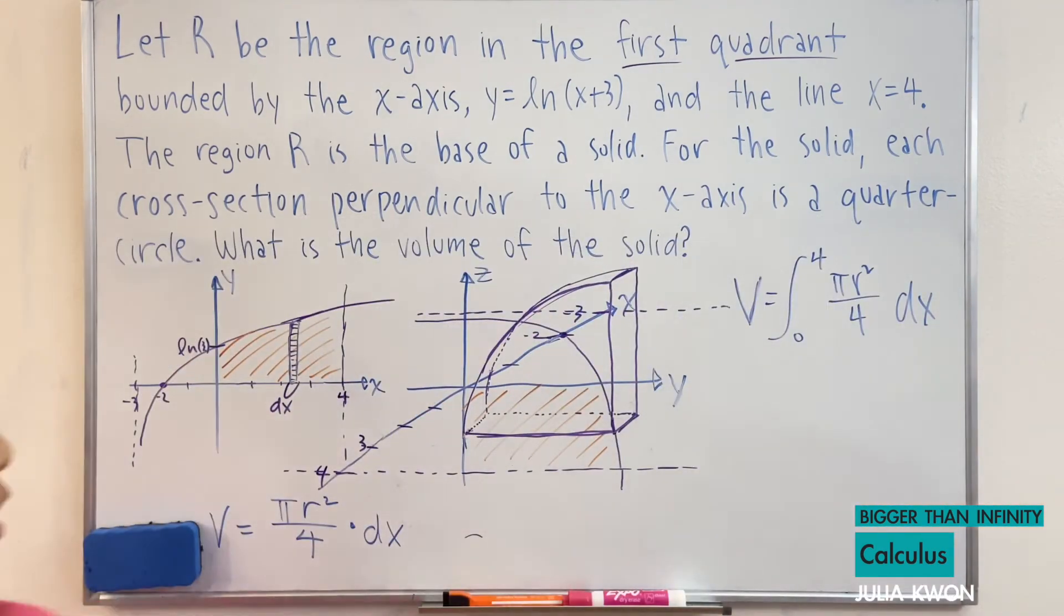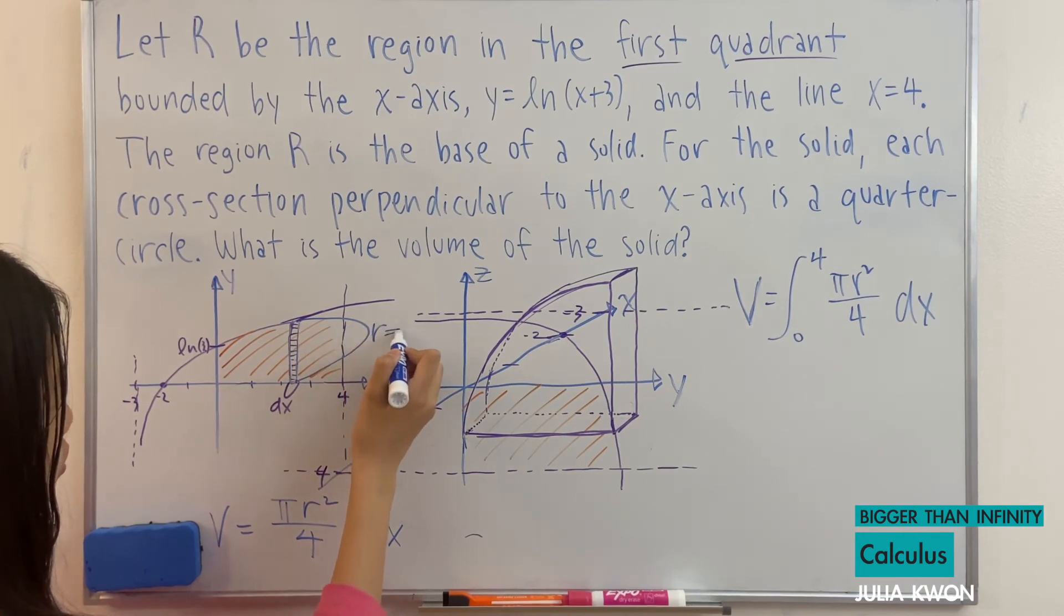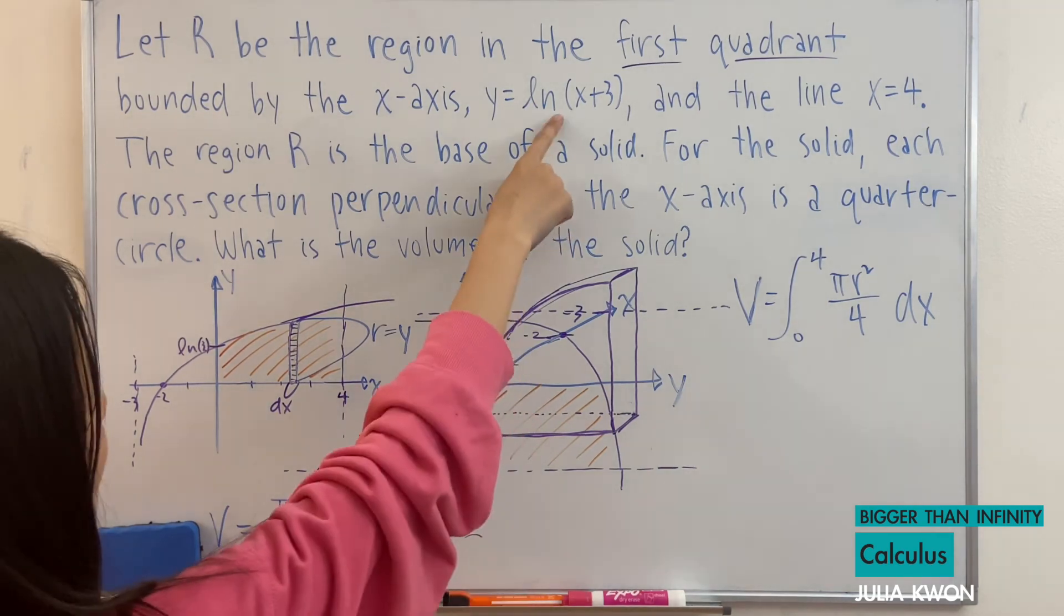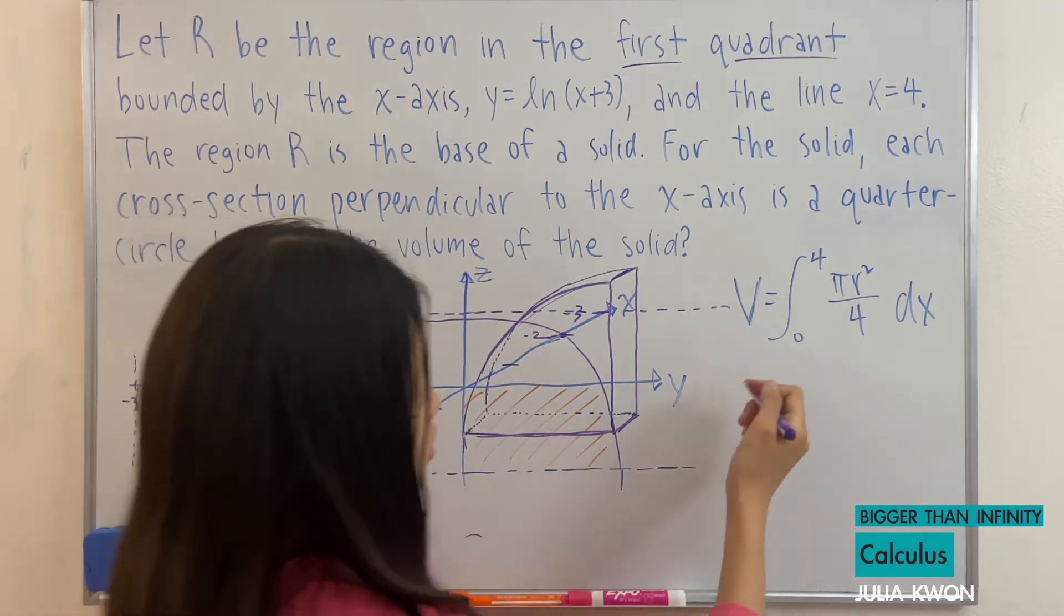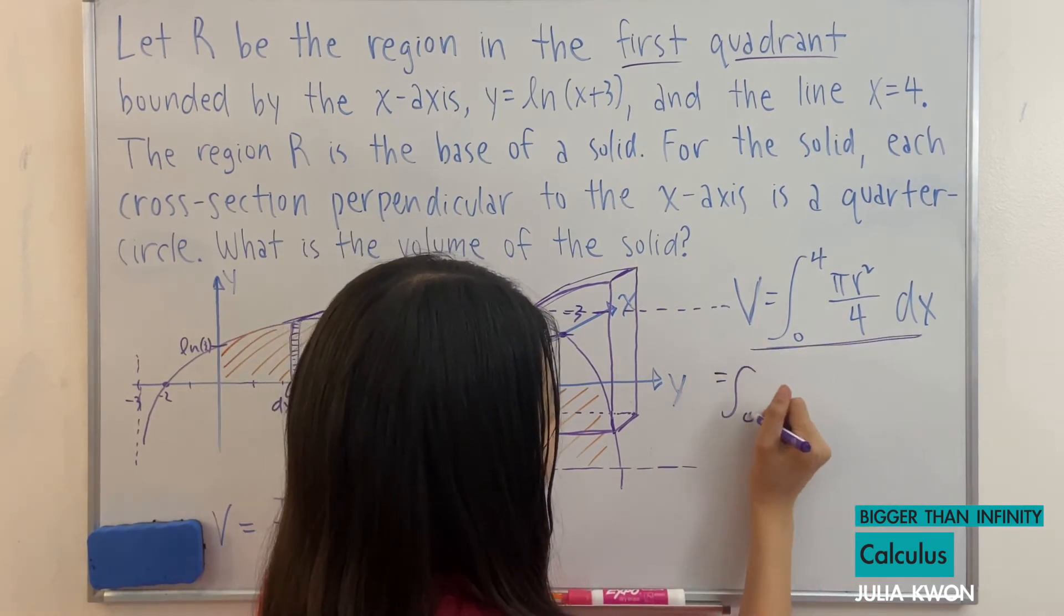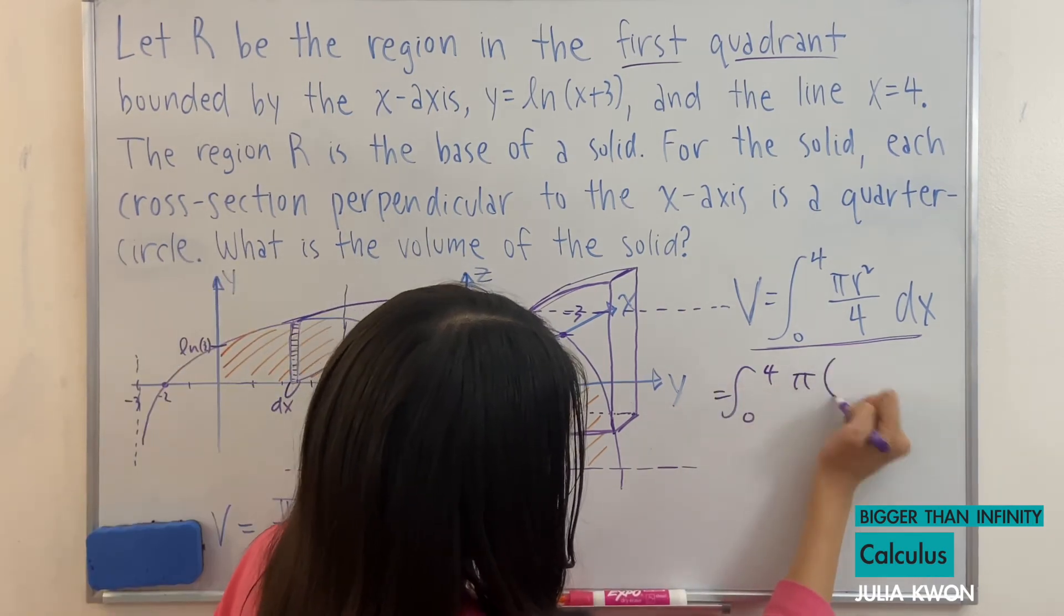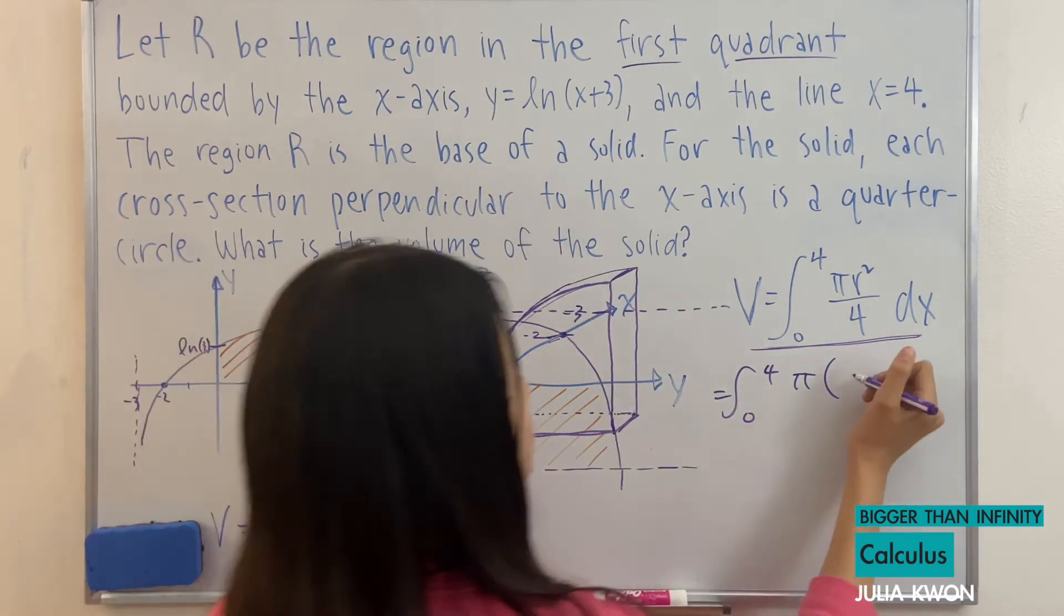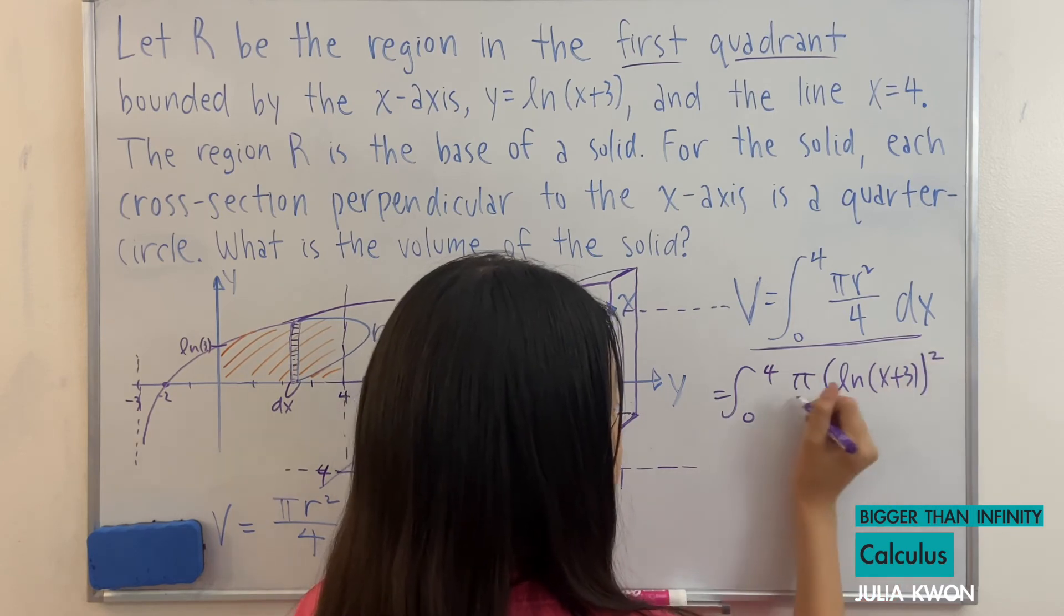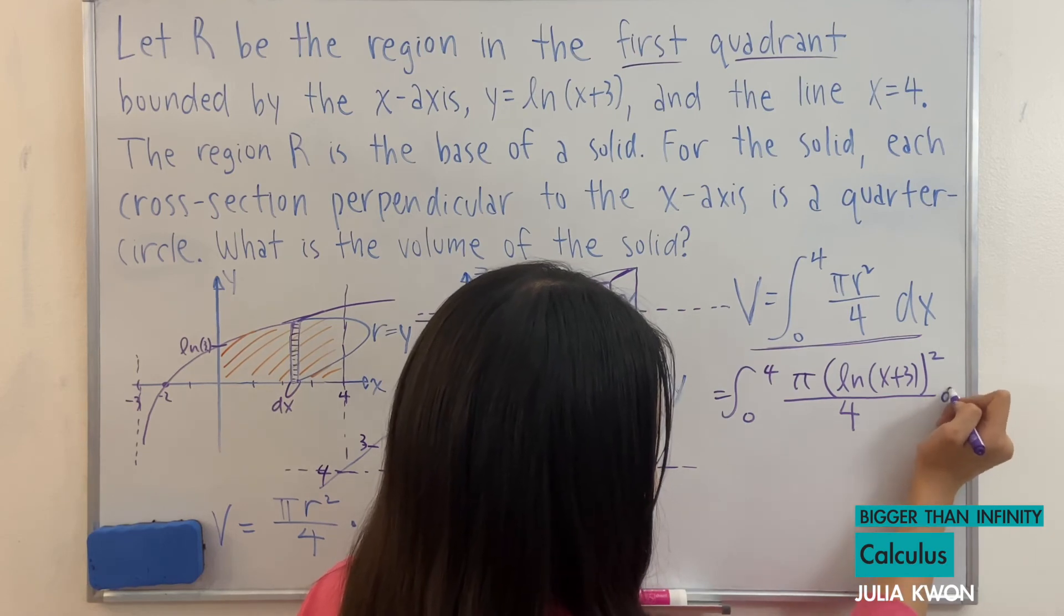Well, the value of r in two dimensions is this length here. This length is r, which is also y. And y is also ln(x+3). So we could write this as the integral from 0 to 4 of... okay, r = y = ln(x+3). And we also have dx.